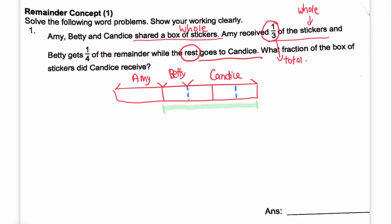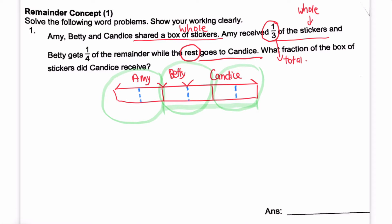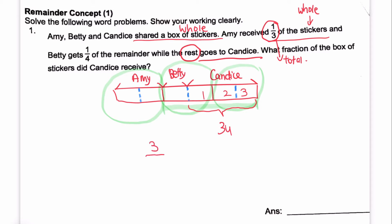Our model is drawn. Let's take a look at Amy's portion. Every one unit we cut it into two parts, so to make a comparison we have to cut Amy's portion into two as well. Now we can answer: what fraction of the box of stickers did Candice receive? Candice received three units out of six units in all. So we divide by three, and our answer is half.